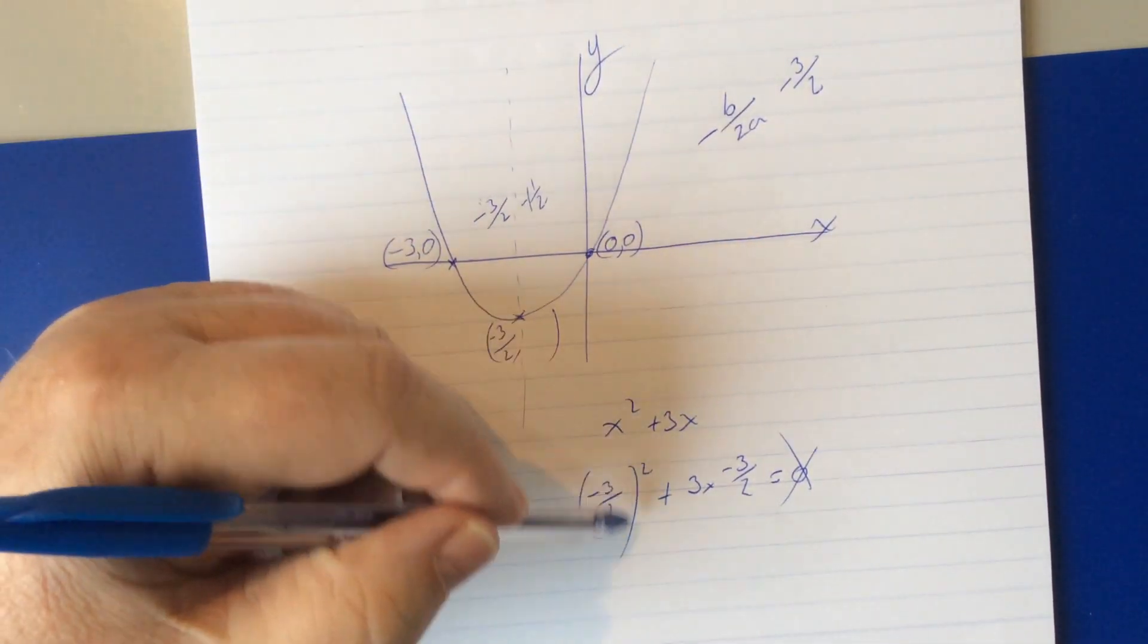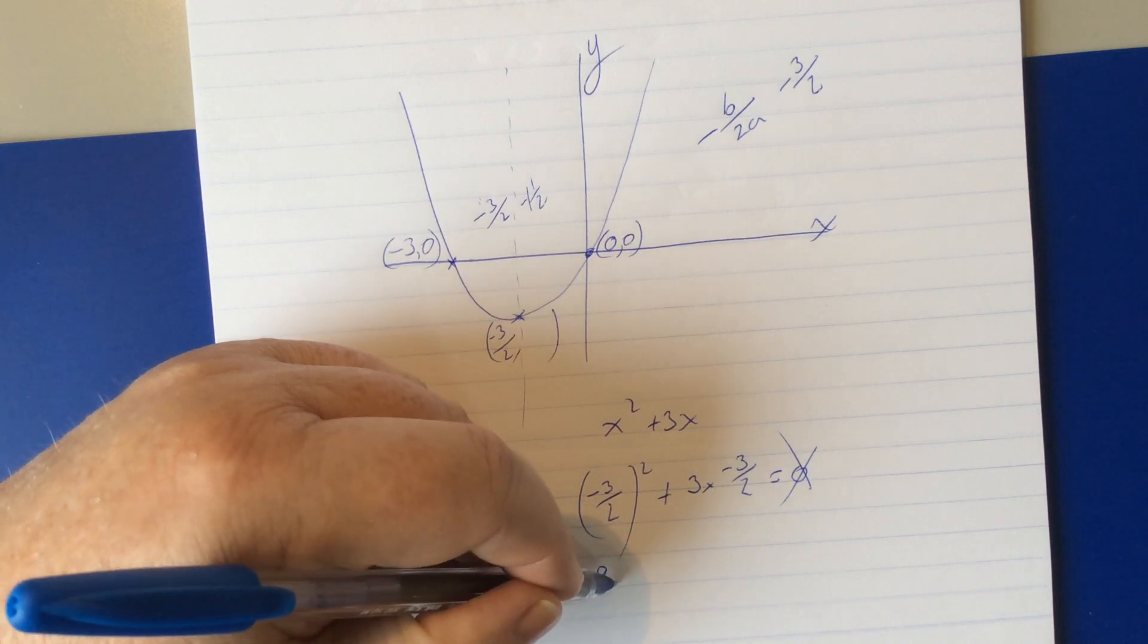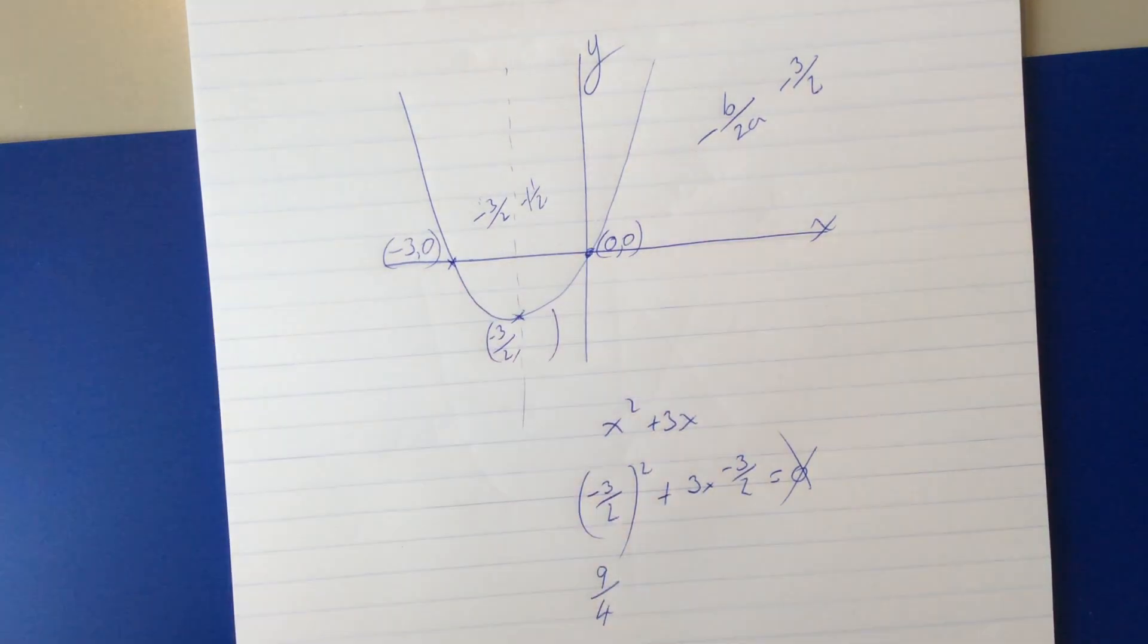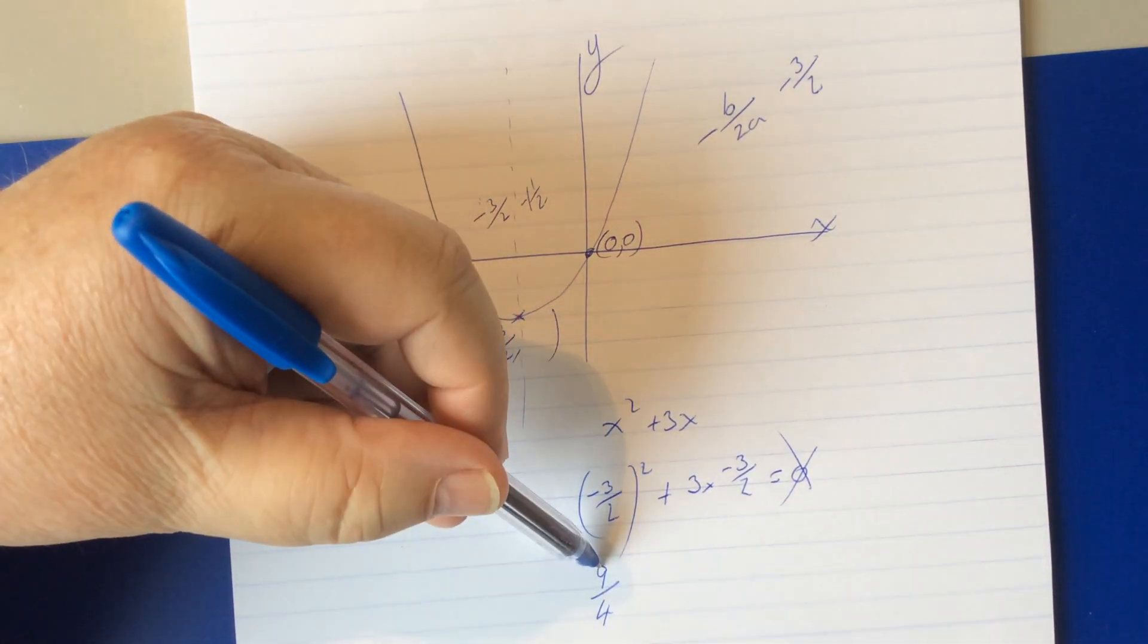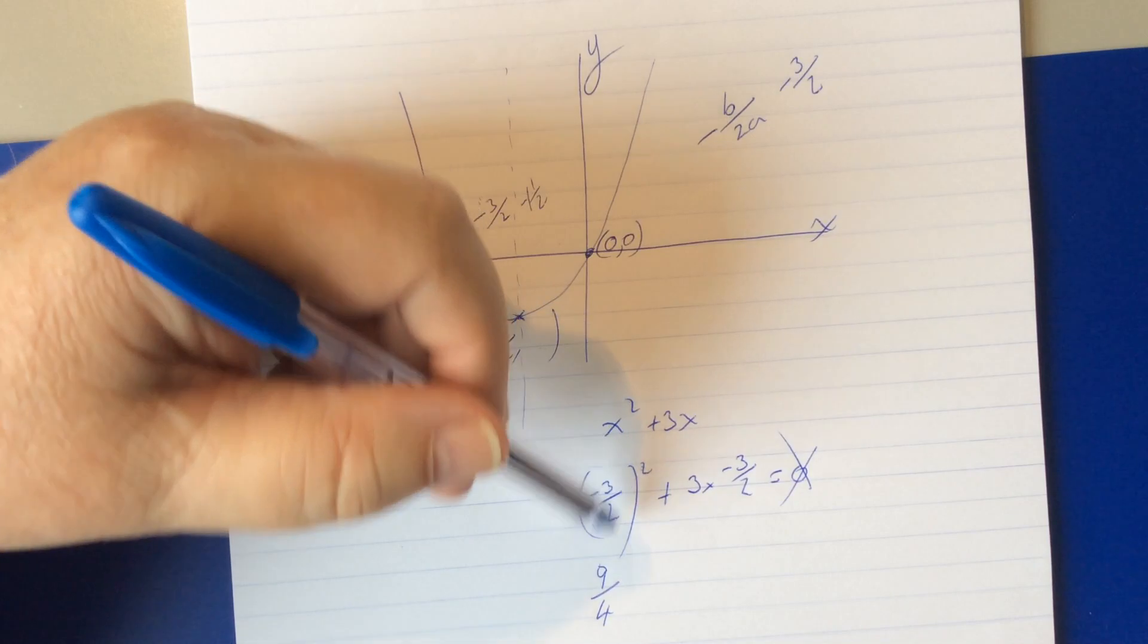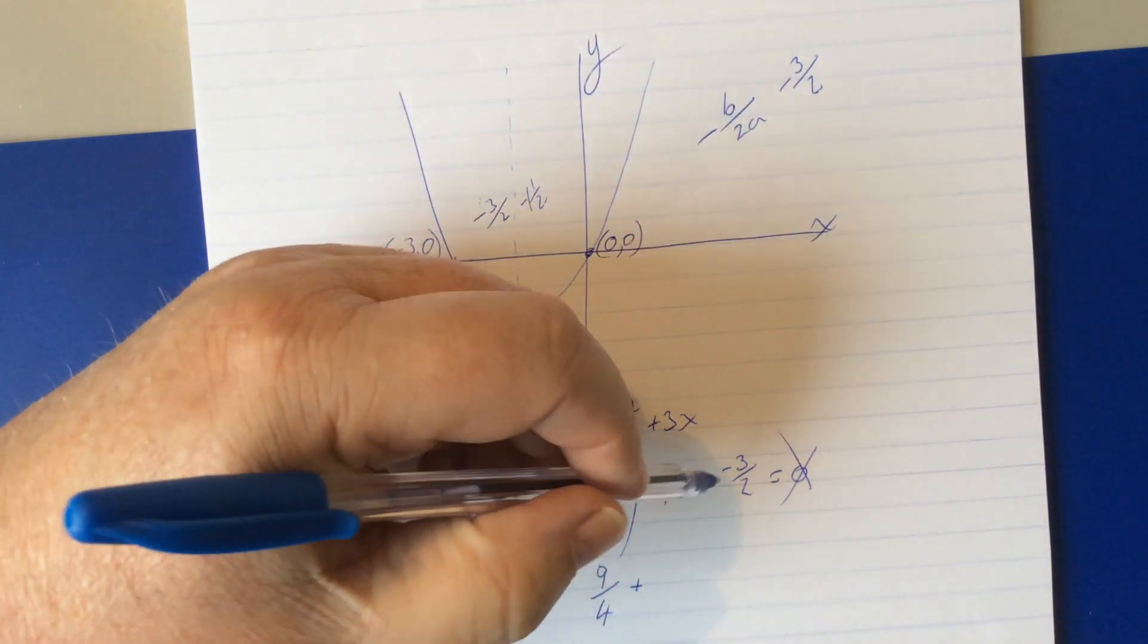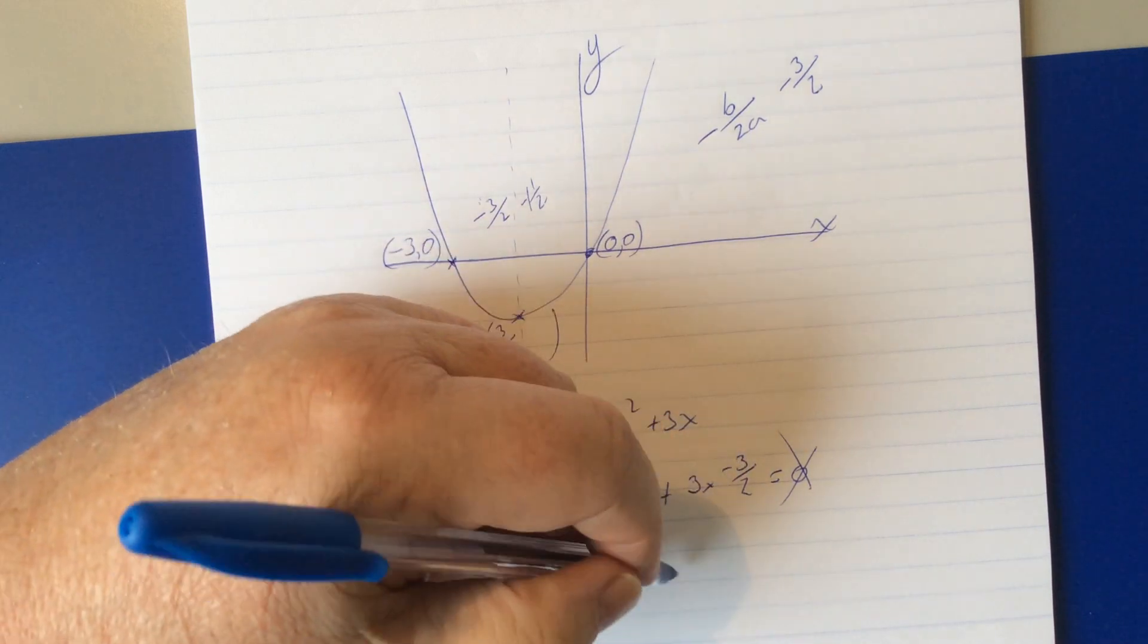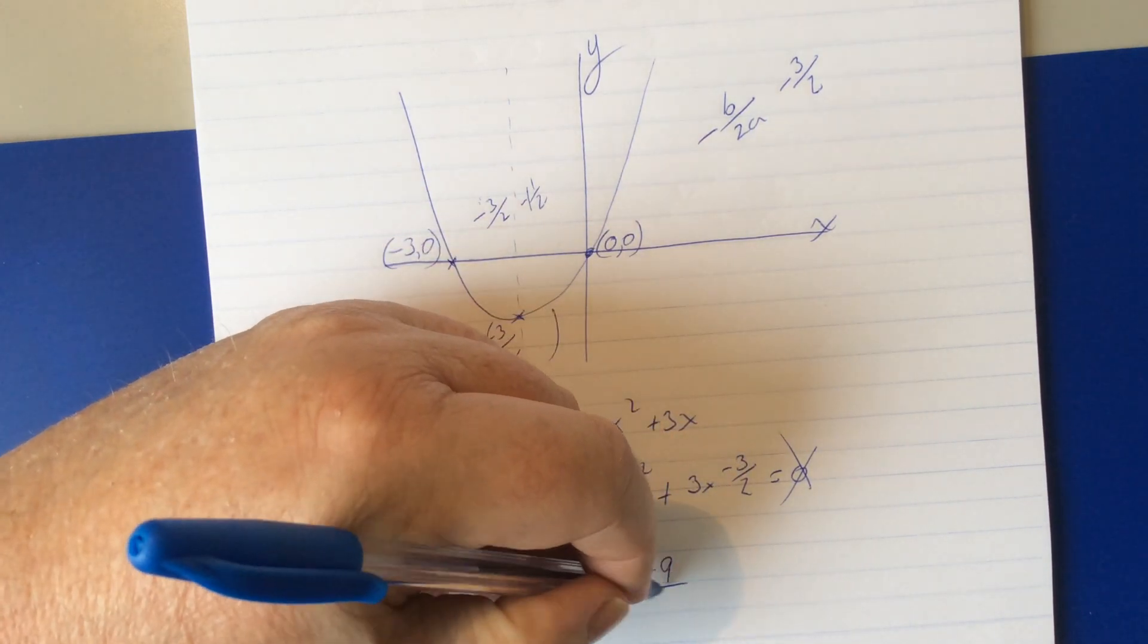Okay so negative 3 over 2 squared is 9 over 4. Negative 3 squared is 9, 2 squared is 4, that's how you do that, plus 3 times negative 3 is negative 9 over 2.